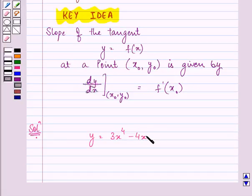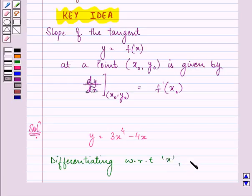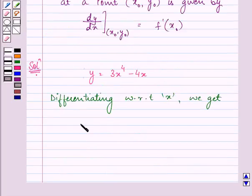Right, so first of all we will be differentiating this equation with respect to x. And on doing so, we get dy/dx equals 12x³ minus 4.